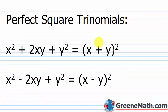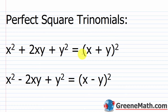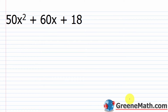Now let's talk about perfect square trinomials. From special products, we know the quantity x plus y squared expands to x squared plus 2xy plus y squared. So we can factor x squared plus 2xy plus y squared back into the quantity x plus y squared. Similarly, x squared minus 2xy plus y squared factors into the quantity x minus y squared. Let's look at an example.